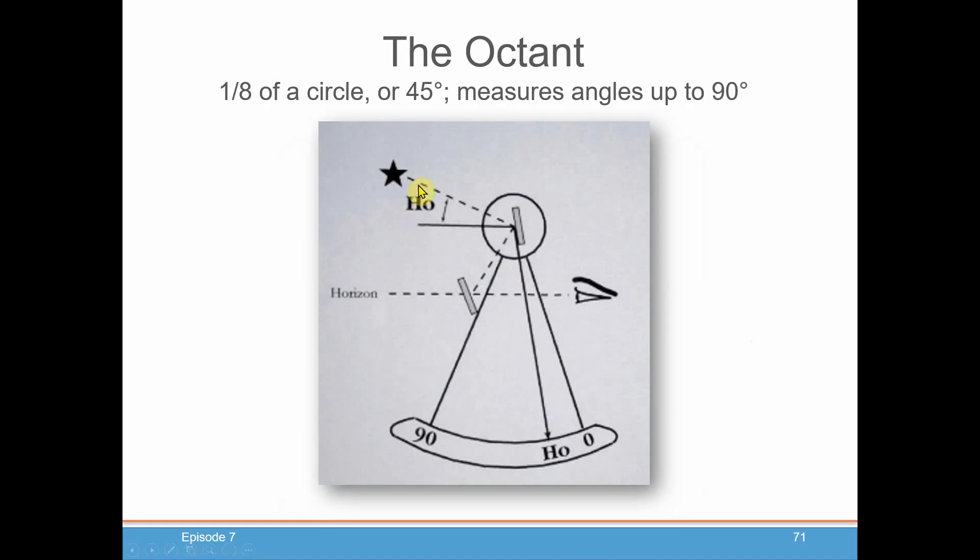It makes use of an optical principle that if you take a mirror and you twist it, turn it by, say, 10 degrees, the actual angle it measures is actually double that, 20 degrees. So even though it's only 45 degrees here, it actually can measure twice that, to 90 degrees.